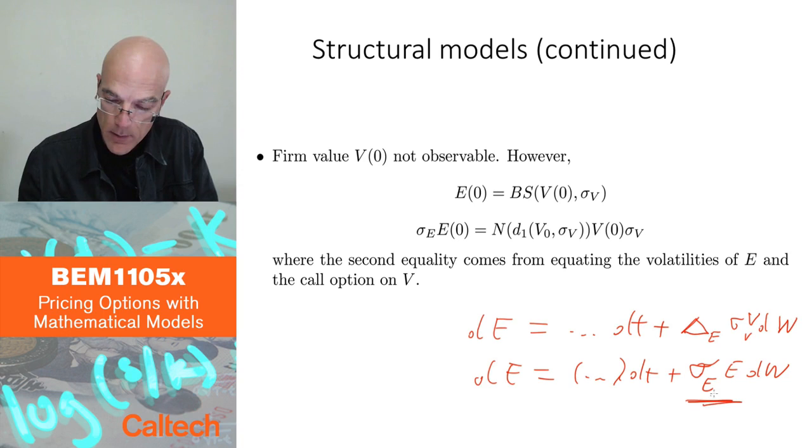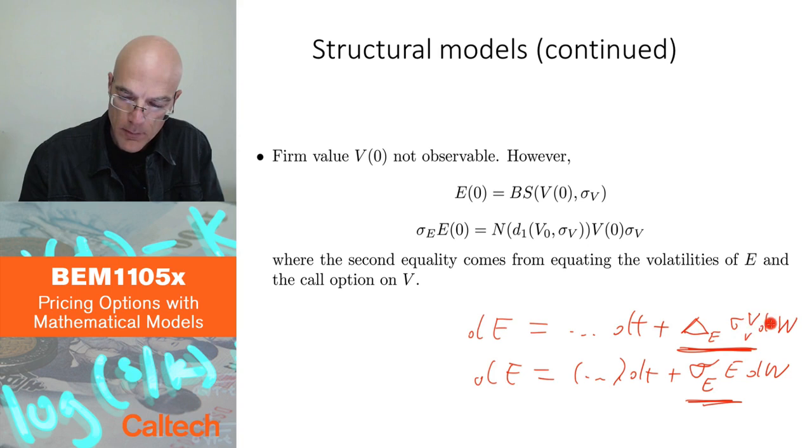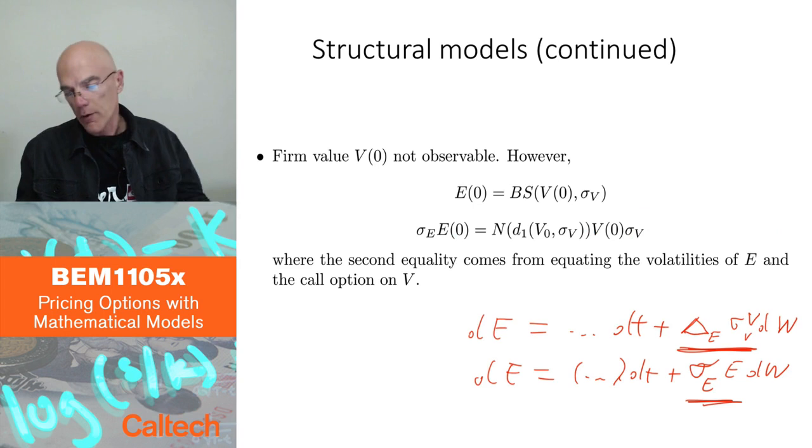So then I make this equal to this, that will give me the second equation. It's basically the delta of equity. So, if I do that, it's written up here. I have sigma E times E is equal to delta of the call option, but I know the formula for the delta of the call option is N of D1. So, it's going to be N of D1, which depends on the underlying value of V0 and sigma V times V of 0 sigma V, which is coming from here. So, it's delta sigma V, and that's here. N of D1 is delta sigma V. So, this gives me two equations with two unknowns.